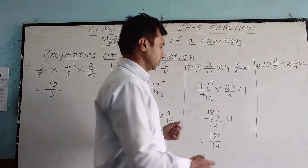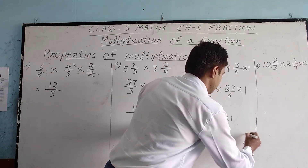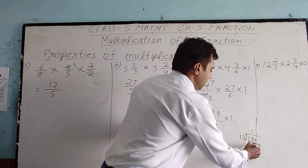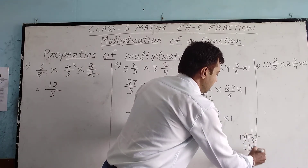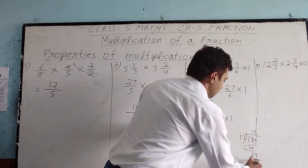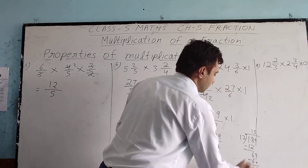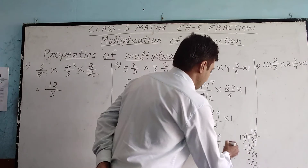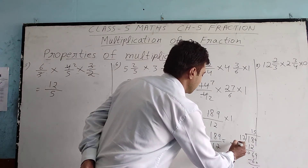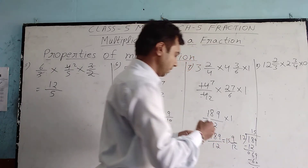We can reduce 189 by 12 to a mixed fraction. 189 divided by 12: 12 goes into 189 fifteen times giving 180, with a remainder of 9. So the mixed fraction answer is 15 and 9 by 12.